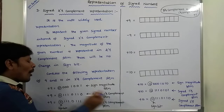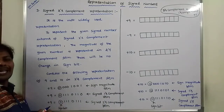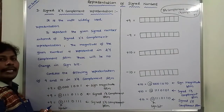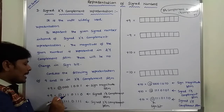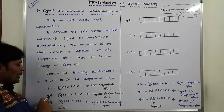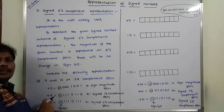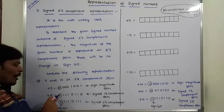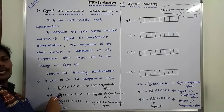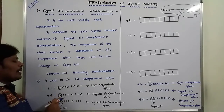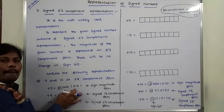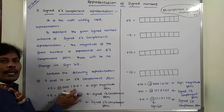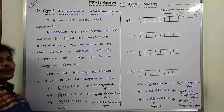Now, the signed one's complement representation of plus 9 can be obtained. There will be no change in the sign bit. Since plus 9 is a positive number, we put 0 at the MSB position as the sign bit. The remaining bits in the magnitude are changed from 0 to 1 and 1 to 0.